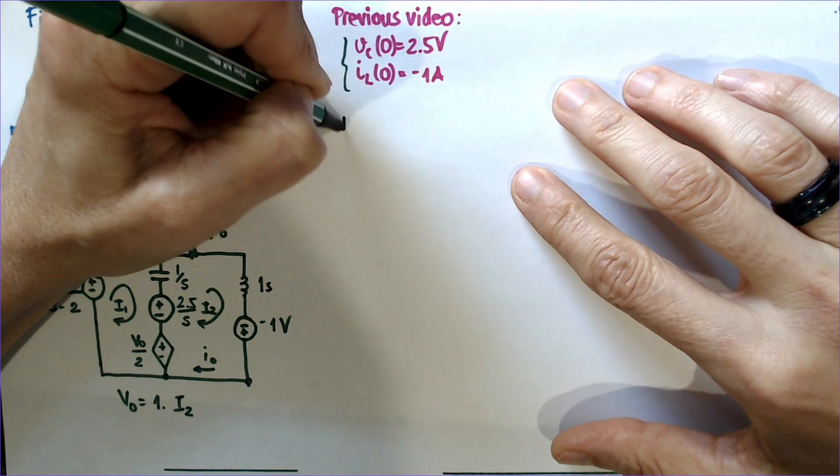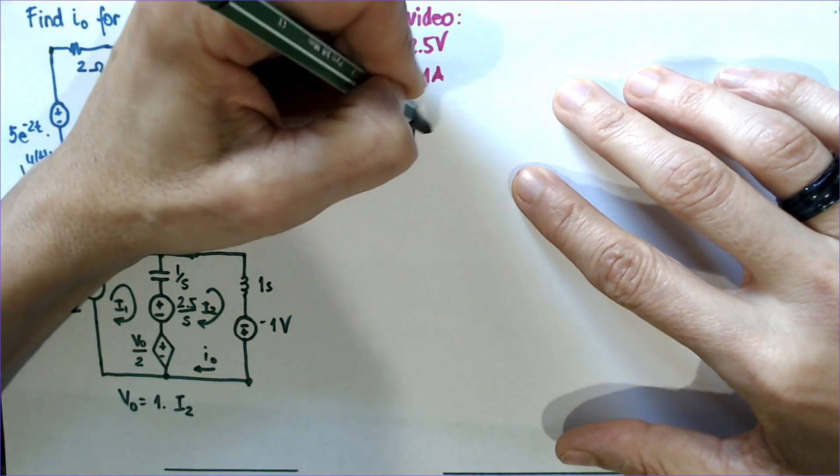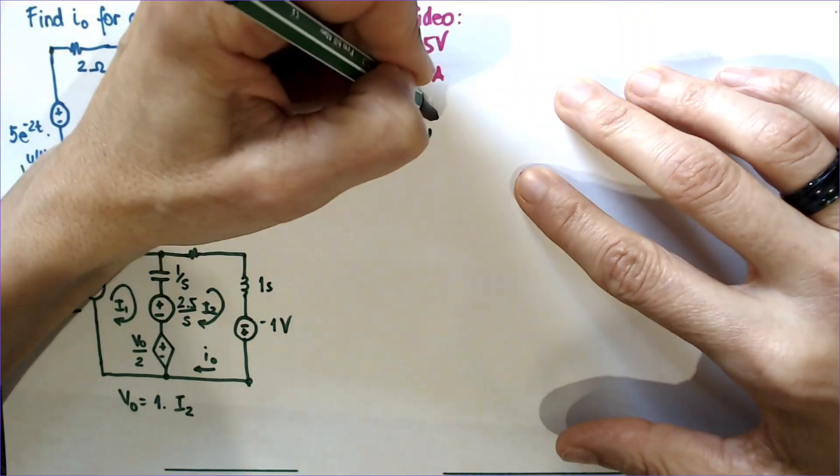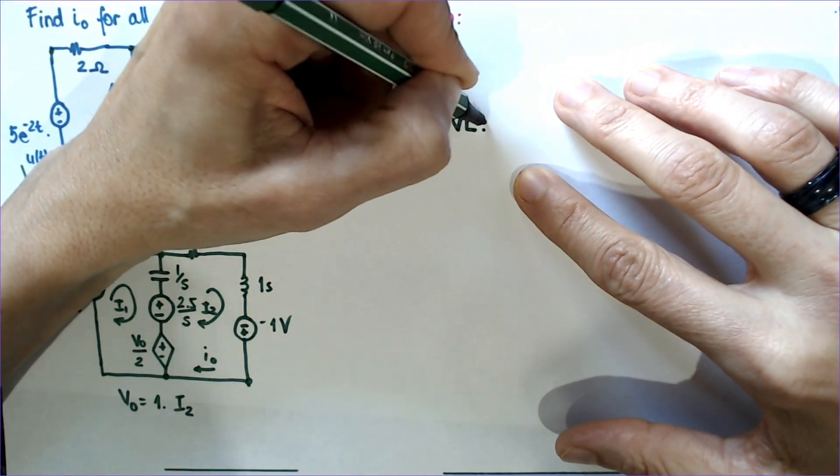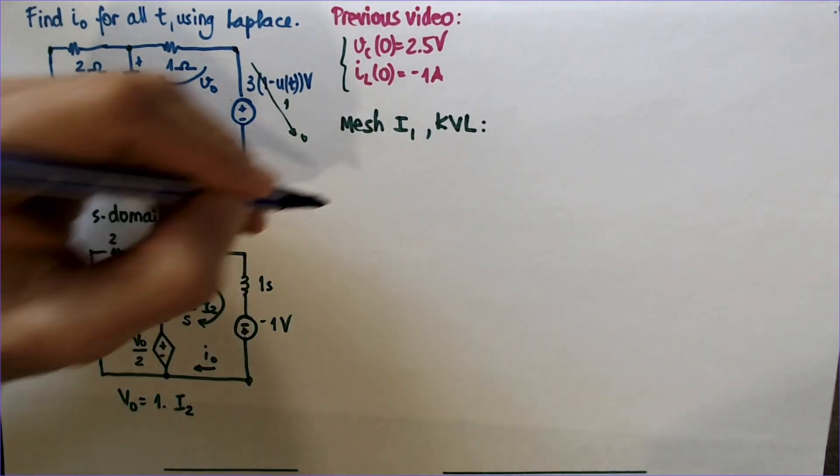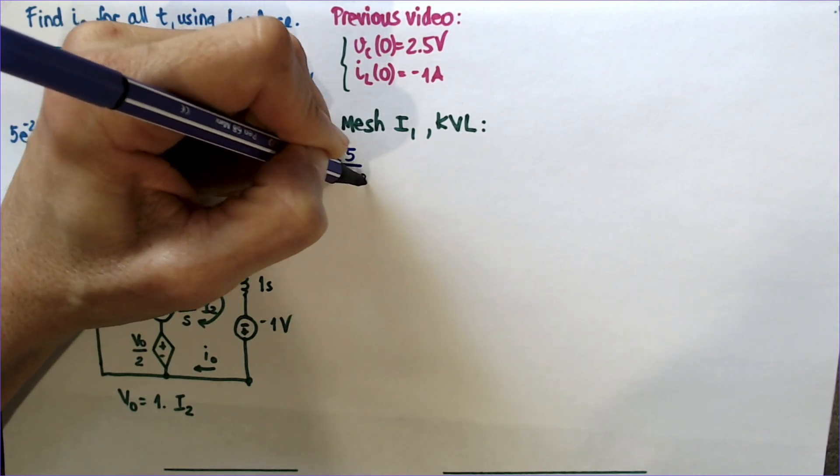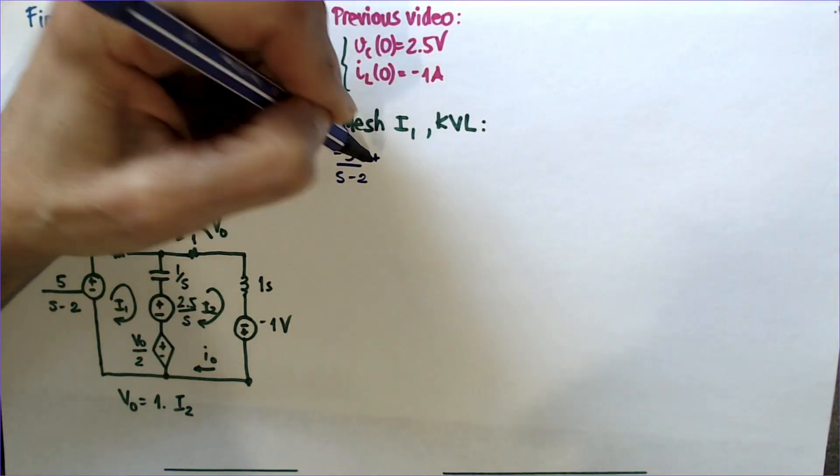So mesh I1, KVL. Now I'm going to start in the bottom left. That's just like what we did in 285. It's going to be minus 5 over s minus 2, plus.